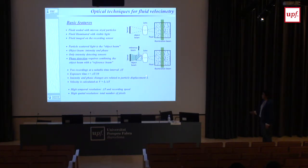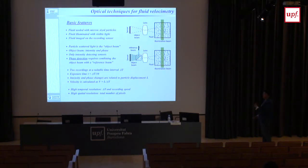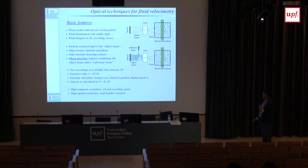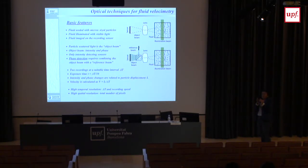Intensity and phase change are related to the displacement. We have high temporal resolution fixed by the time interval and recording speed. Most of what I'm showing has been used with a high-speed system: a laser firing at 10,000 pulses per second and a camera at 1,000 frames per second using CMOS cameras. High spatial resolution depends on the camera — with a 2,000 × 2,000 pixel camera, that is our resolution. By changing the area we are looking at, we can change the spatial resolution.